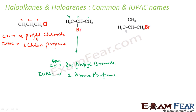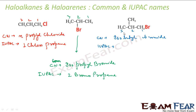Let's take this compound. I have a butyl group — myth, eth, pro, but — and this butyl part itself is a branched chain, not a straight one, so it will be isobutyl. The bromine is attached at the end, so it will be isobutyl bromide. For the IUPAC name, let's number it 1, 2, 3 — so it will be 1-bromo-2-methylpropane.